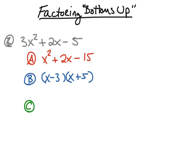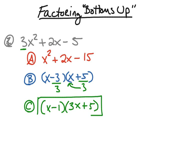Now I'm going to take these two numbers and divide them by 3 — that's the leading coefficient. Negative 3 divided by 3 is negative 1. If I try to divide 5 by 3, that results in a decimal, so we bring that bottom number up in front of the x, making it 3x + 5. Therefore, the factors of 3x² + 2x − 5 are (x − 1) and (3x + 5). Multiplying these together gives 3x² + 2x − 5.